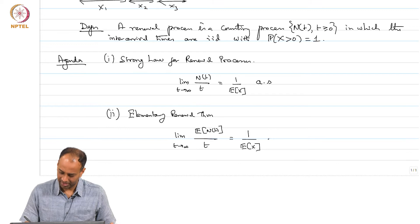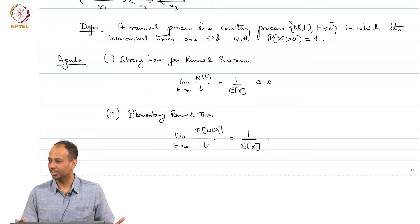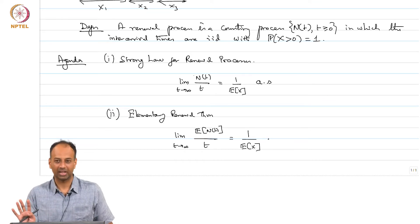Here in the second statement I did not have to say almost surely or anything like that, why? Expected NT over t will be a number for every t, as t tends to infinity the limit will be a number if at all it exists. Whereas here NT over t is a random variable for every t. So, as t tends to infinity I am looking at a limit of a sequence of random variables. I have to say in what sense it converges, I am saying it converges almost surely.